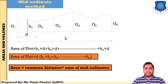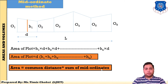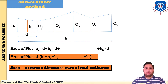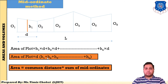The area of the plot equals h1×d + h2×d + ... + hn×d. Since d is common, this becomes: area = d × (h1 + h2 + h3 + ... + hn). So the main equation is: Area = common distance × sum of mid ordinates. This is the basic equation of the mid ordinate method for finding boundary area. o1, o2, o3 are offsets or ordinates; d is common distance; L is length of baseline.